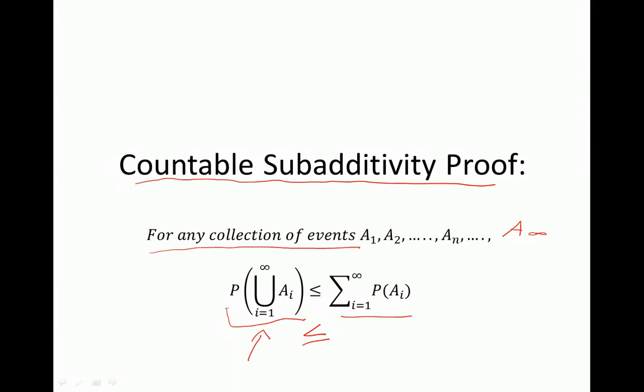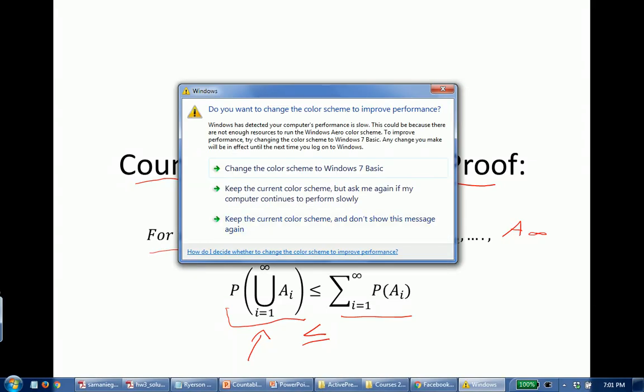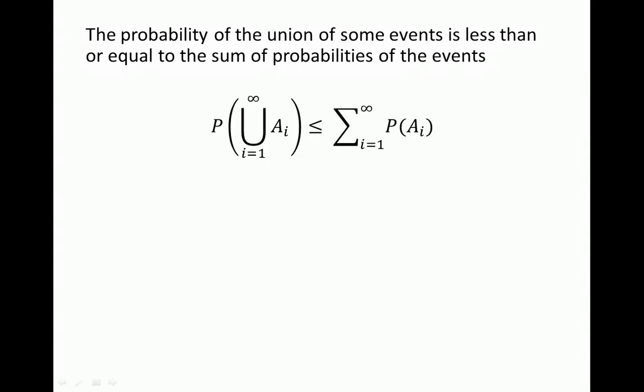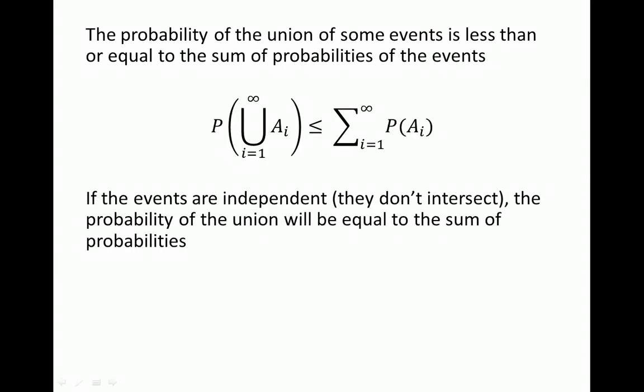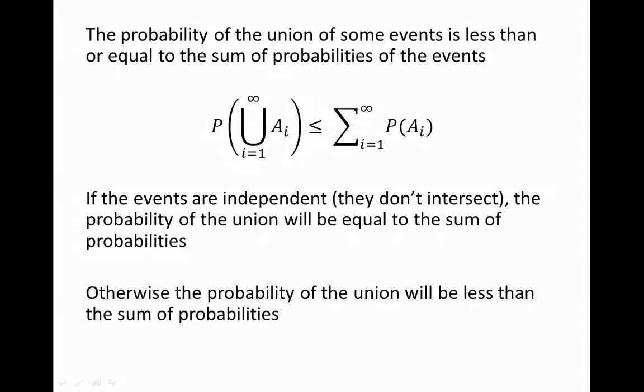Events can be independent or they could have some intersections, but the probability of the union is never greater than the sum of probabilities. If events are independent — meaning they don't intersect — the probability of the union will be equal to the sum of probabilities. Otherwise, the probability of the union will be less than the sum of probabilities, giving us the strict less-than sign.